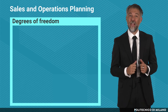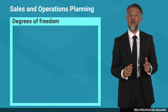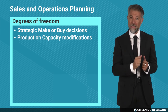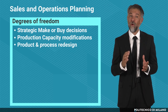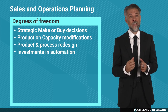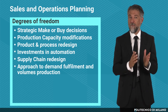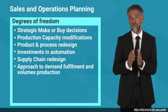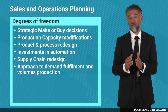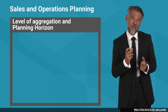S&OP aims at configuring and right-sizing the production system. Degrees of freedom at this stage are strategic make-or-buy decisions, production capacity modifications, product and process redesign with a manufacturing perspective, investments in automation, supply chain redesign, approach to demand fulfillment — make to order (MTO) vs. make to stock (MTS) — and volumes of production: one-off vs. batch production.